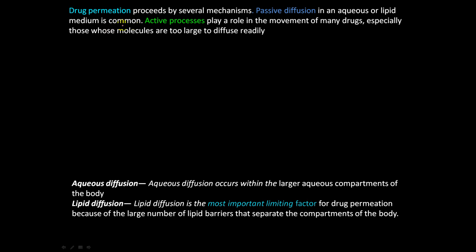So drug permeation proceeds through several mechanisms. One is the passive diffusion in an aqueous or lipid medium. And the second is active processes that play a role in the movement of many drugs, specifically large molecules or really charged molecules that are hard to diffuse past lipid bilayers through cells and walls.